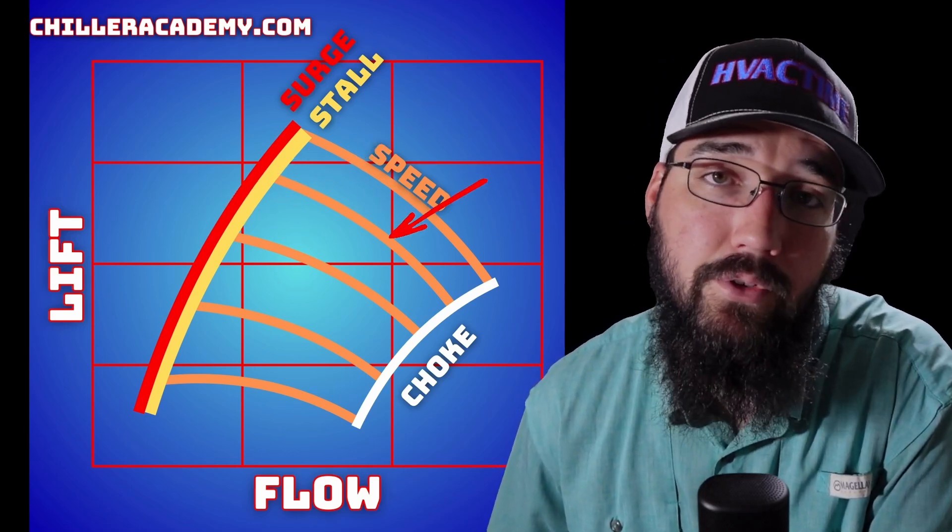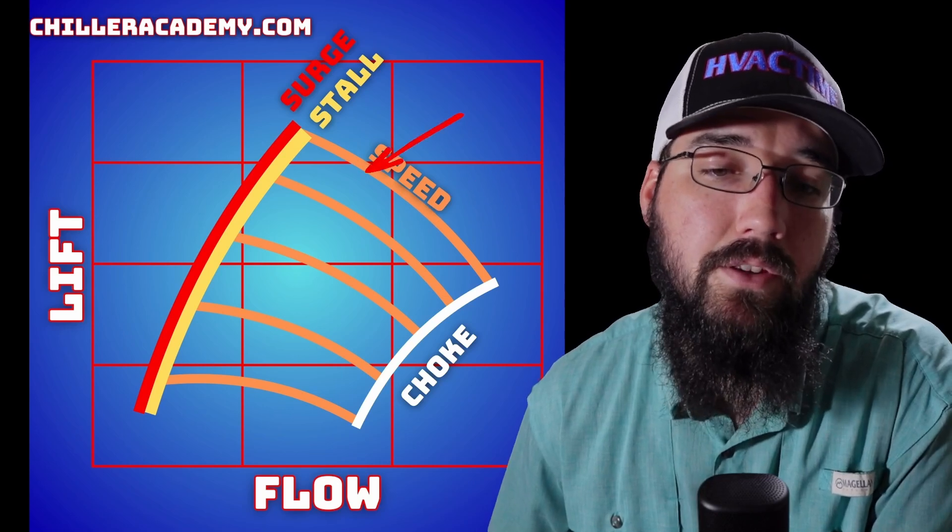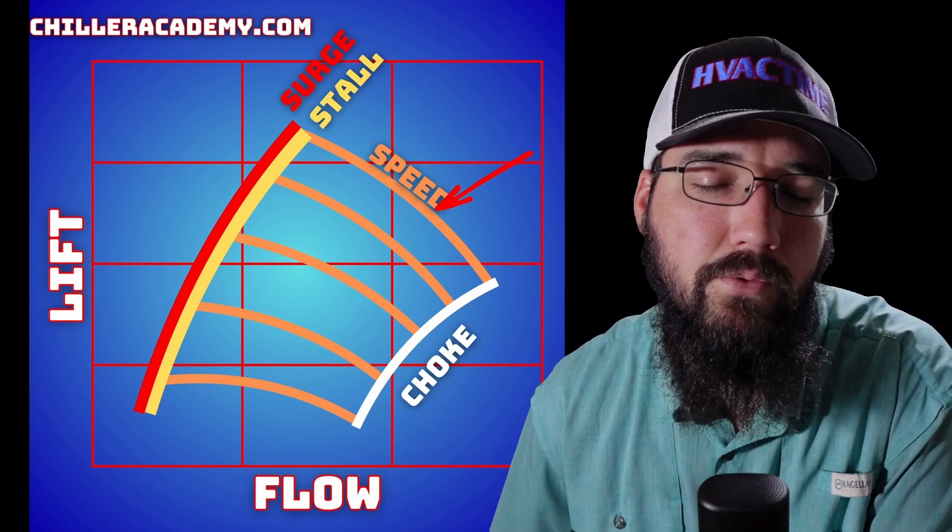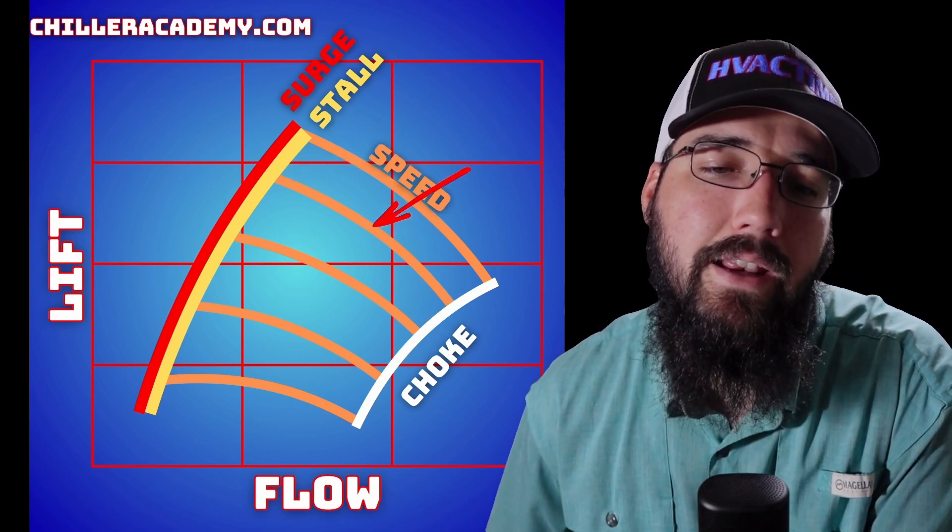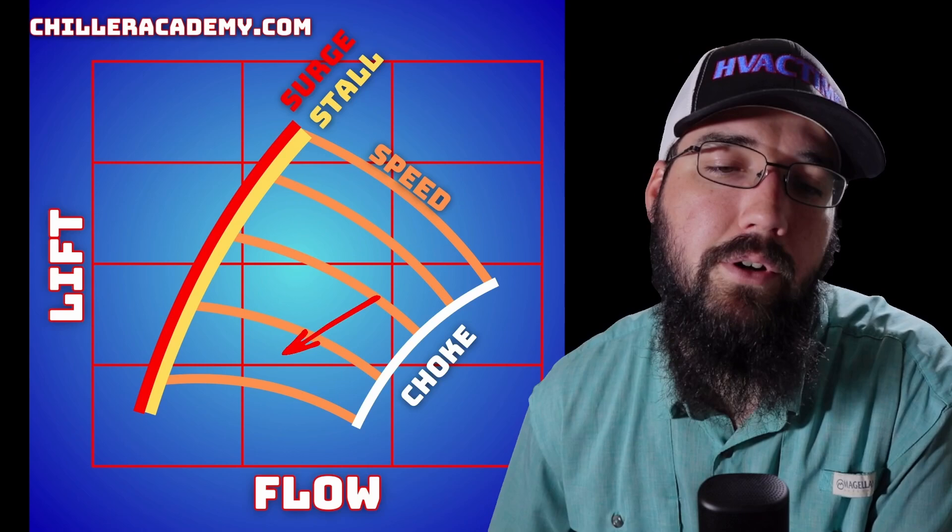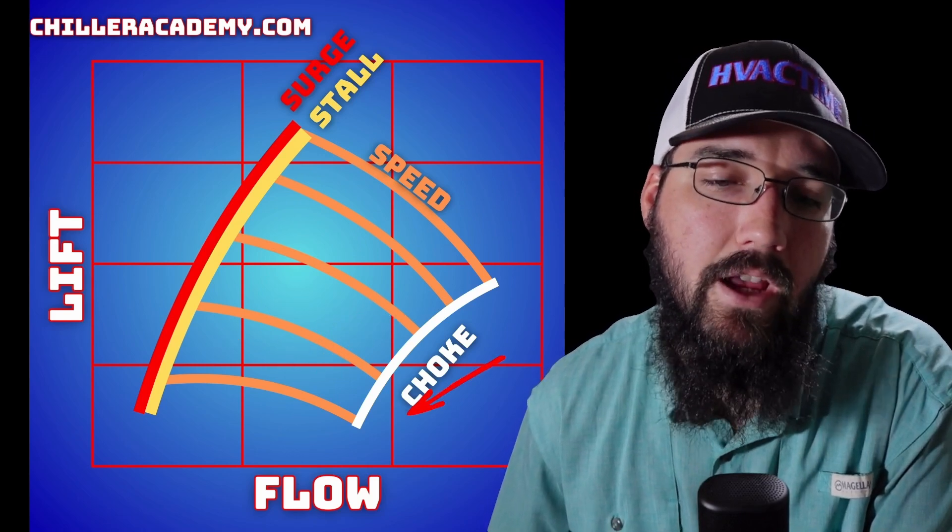If you have a constant speed system, then these speed lines don't really have any reference to you. But a lot of modern systems are going to be variable speed moving forward, and so that affects what our top-end ceiling is for where we're going to be at in this graph at any given time.